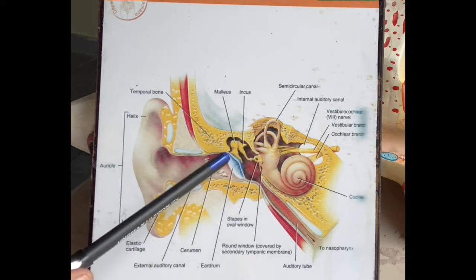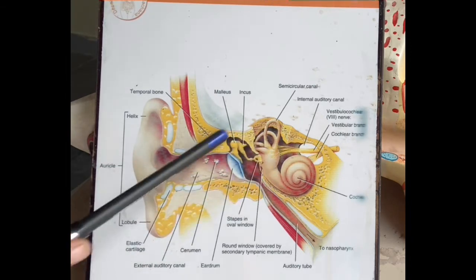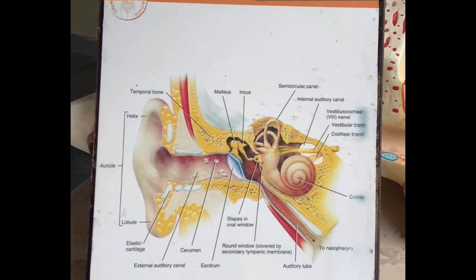This compact cavity is called the middle ear cavity. This middle ear cavity is placed in the petrous portion of the temporal bone.